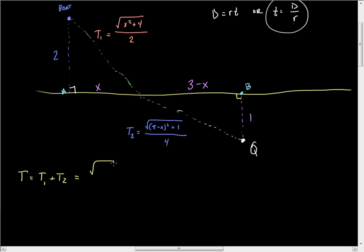Which is going to be the square root of X squared plus four over two plus square root. If I combine the things underneath and just do this algebra, this is going to give me X squared minus six X plus ten all over four. Now I want to combine these all over one common denominator. This is going to be two times the square root of X squared plus four plus the square root of X squared minus six X plus ten all over four. That's my T.